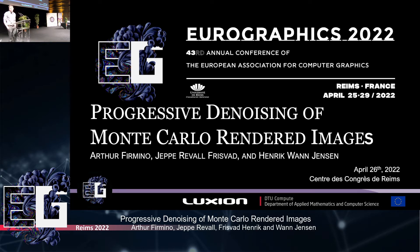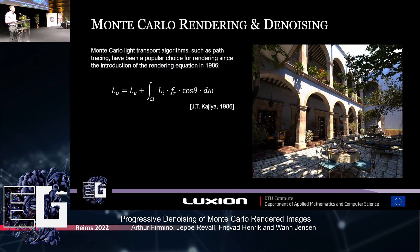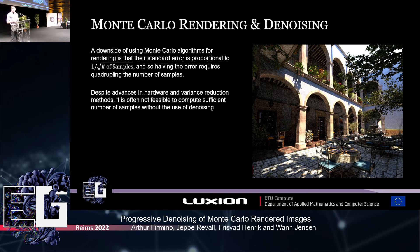Hello, my name is Arthur Firmino and today I'll be presenting the paper titled progressive denoising of Monte Carlo rendered images, authored by myself, Jeppe Revall Frisvald, and Henrik Wann Jensen. Monte Carlo light transport algorithms such as path tracing have been ubiquitous since the introduction of the rendering equation by James Kajiya in 1986, thanks to their simplicity and ability to render scenes with complex light transport. However, the nature of these algorithms is such that rendered images will contain noise due to Monte Carlo integration.